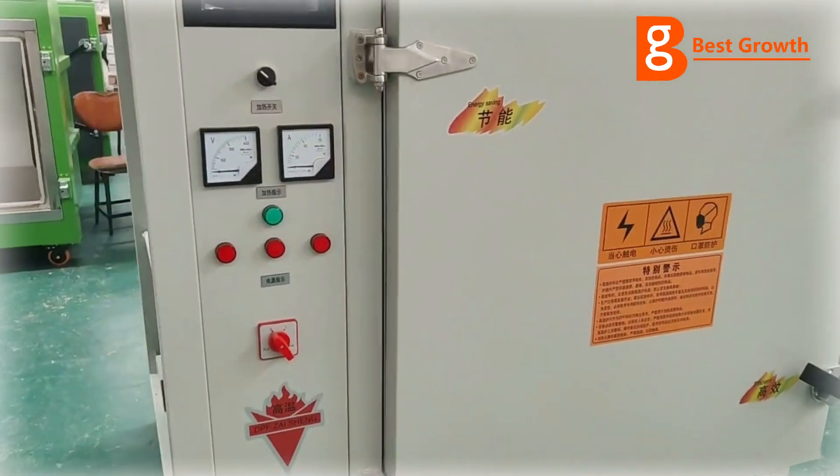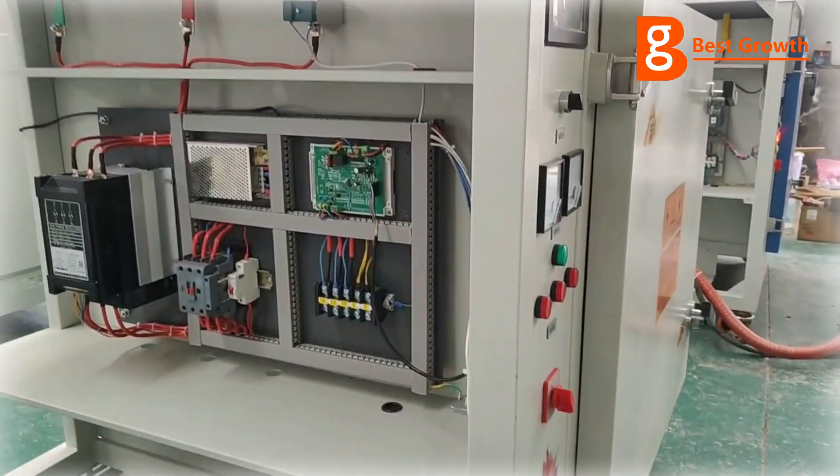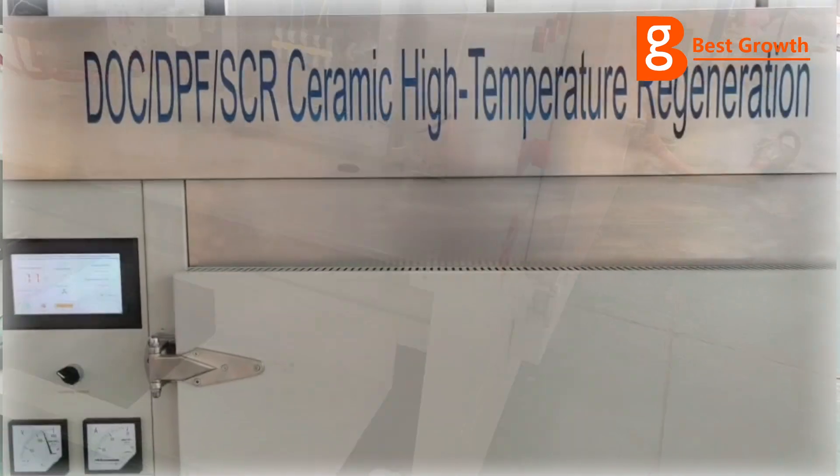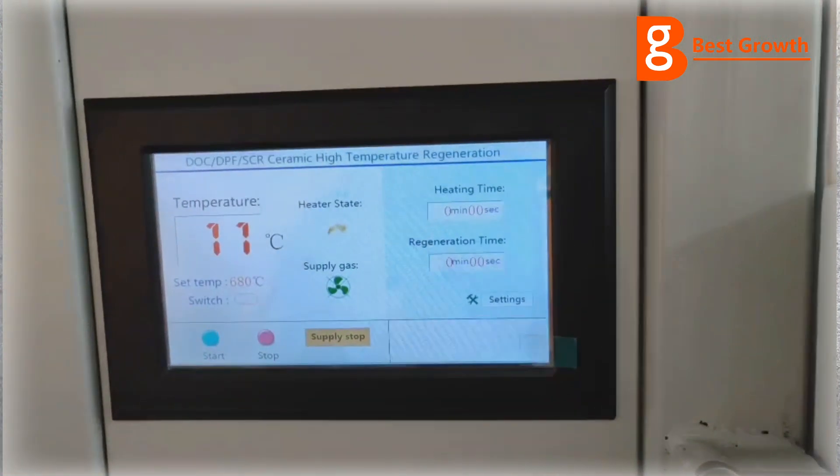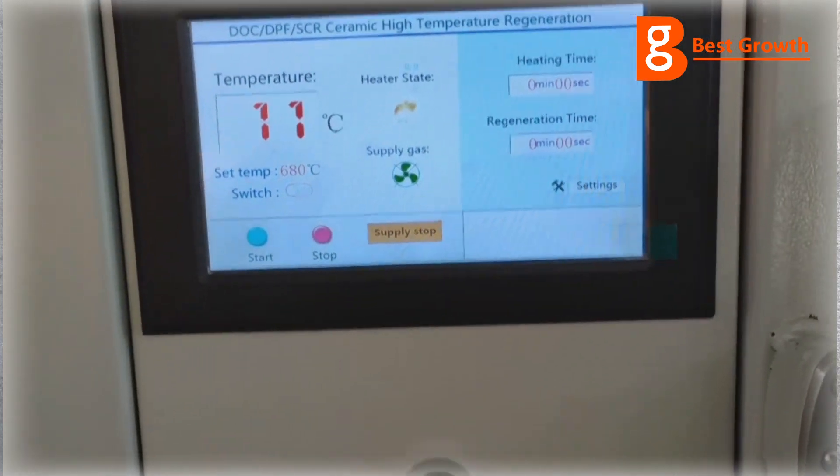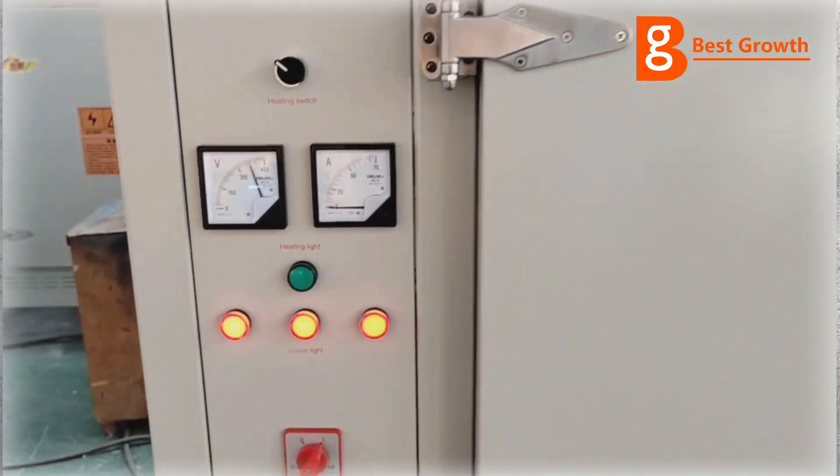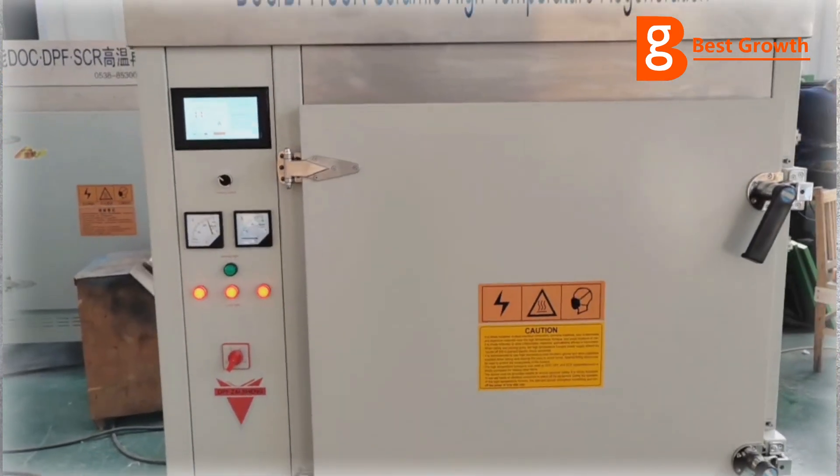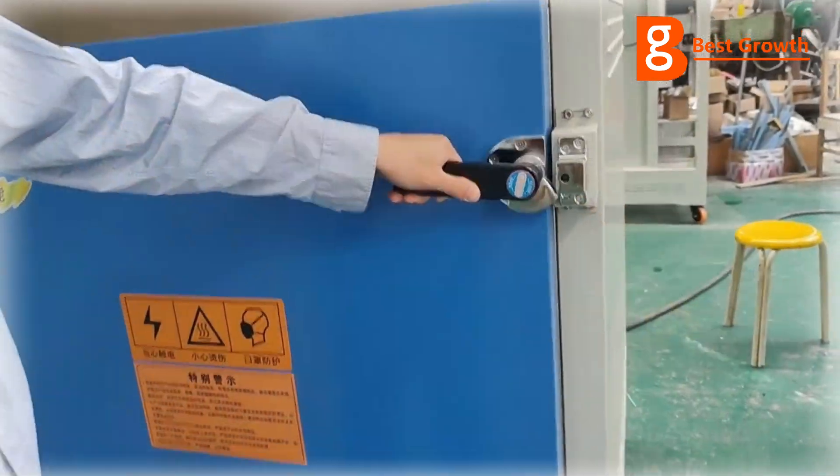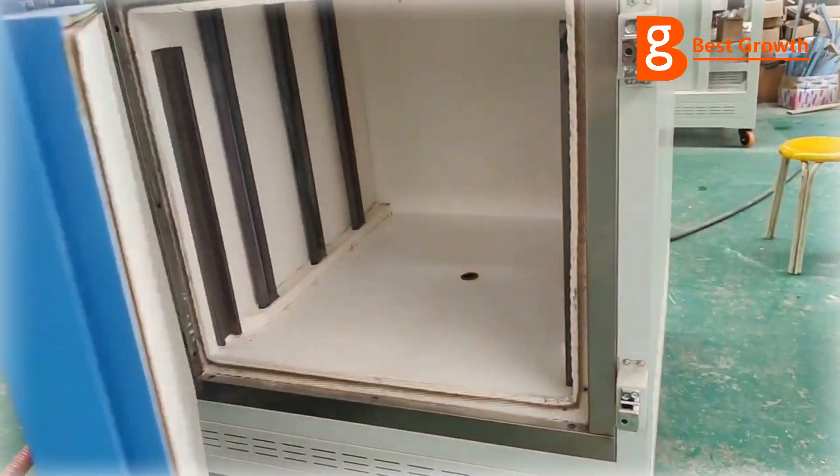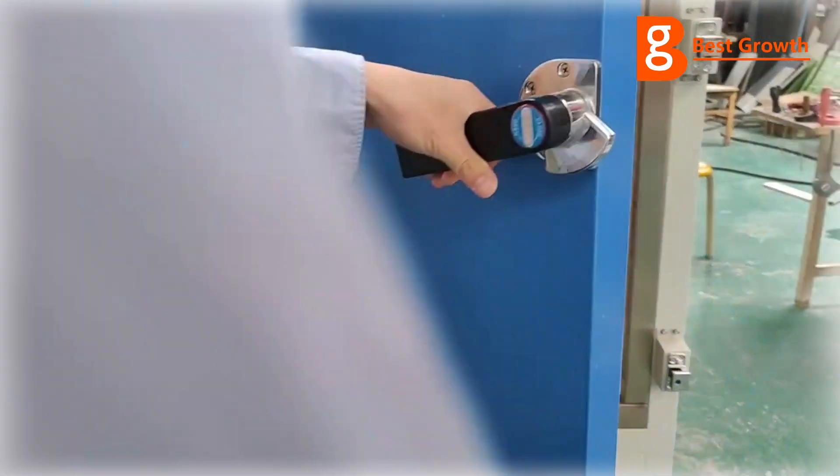And what about the SCRs? Do they also need to be cleaned frequently? Not so frequently as the DPF filters, of course. But the SCRs also, once in a while, have to be placed in such a machine. Burning the ad blue, burning the urea causes crystallization on the catalyst active material inside the body. So to remove that crystallization, we also can place the SCR catalyst inside this device to burn it out.